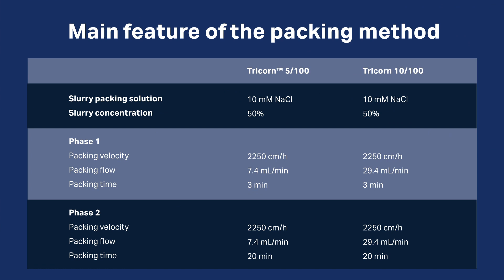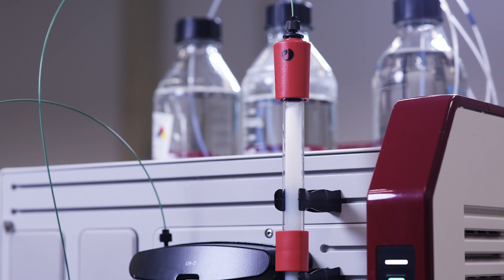If you work at lower temperature, reduce the flow accordingly to avoid high back pressure caused by high viscosity. After the indicated packing time for the specific resin, stop the pump. Place the stop plug at the bottom of the column.